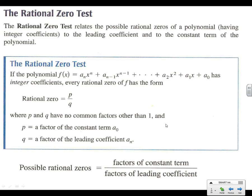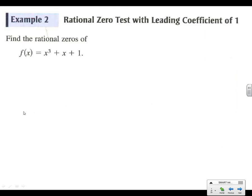Let's introduce the rational zero test. The rational zero test tells us what our possible zeros could be — not what they are going to be, but what the possible ones are. The key is: the factors of the constant term (our last term), which we call p, divided by the factors of the leading coefficient, which is the a-sub-n, which we call q. So it's last over first — all the possible rational zeros.